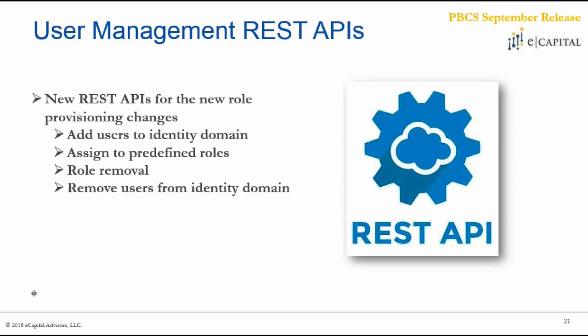The REST APIs have also been updated to include adding and removing users to the identity domain, accessing and assigning predefined roles, removing roles, and removing users. As we move through the different facets of the tool, we're seeing updates across automation in EPM Automate and the APIs. Oracle has done a fine job of ensuring that all components and modules of the tool are being included and considered as these updates are rolled out.